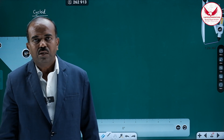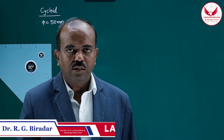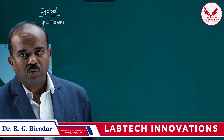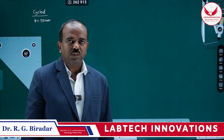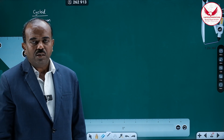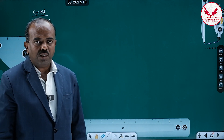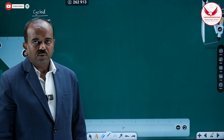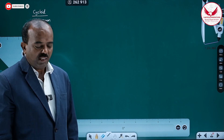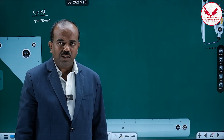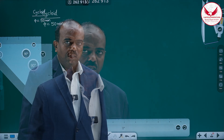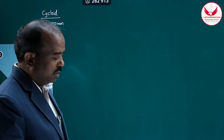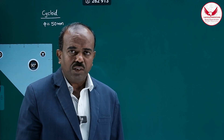Friends, today we will see how to draw the cycloid. First I will tell what is cycloid. When a circle rolls along a straight line without slipping, the path traced by a point on the circumference of that circle is nothing but a cycloid. For the cycloidal curve we need the diameter of that rolling circle. So let us consider diameter 50 mm, and then we will see the step by step procedure of drawing the cycloid.